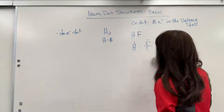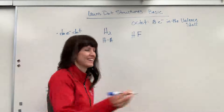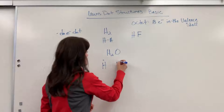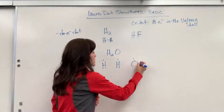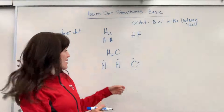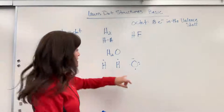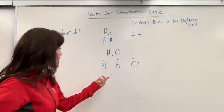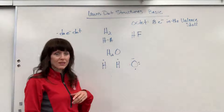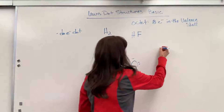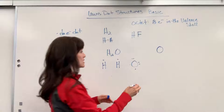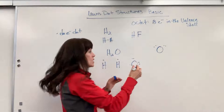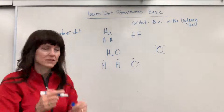Let's do a couple more — really common compounds. Water, H₂O. We've got two hydrogens and one oxygen. Oxygen has six valence electrons: one, two, three, four, double up, five, six. I see two paired sets of electrons and then two unpaired electrons. So oxygen needs two more electrons to get to eight, to have that octet. I'm going to take my oxygen, rotate it the classic way you see it in a textbook: put the two lone pairs — those paired electrons — up on top, and then one electron here, one electron here.